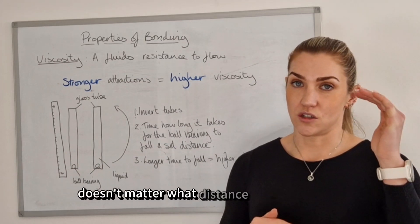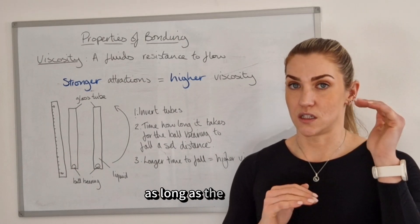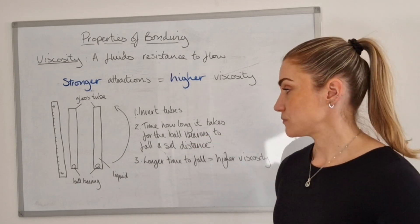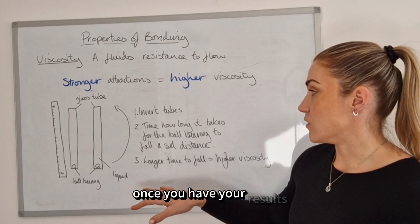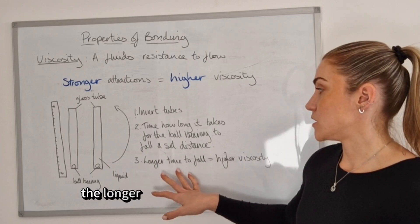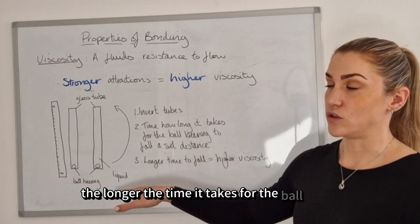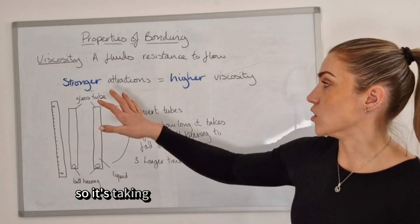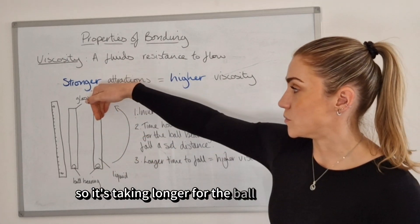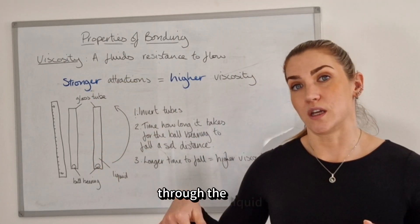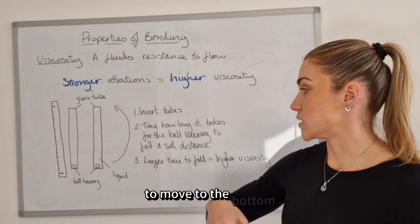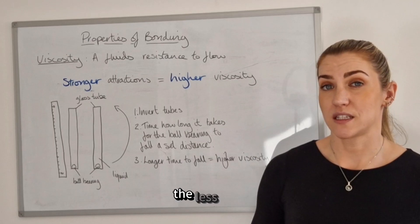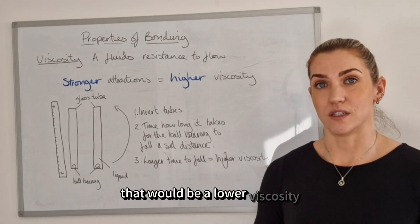It doesn't matter what distance you record over, as long as the distance is exactly the same for all your experiments. Once you have your results, the longer the time it takes for the ball to fall, the higher the viscosity of that liquid — it's taken longer for the ball to push its way through. The less time it takes, the lower the viscosity.